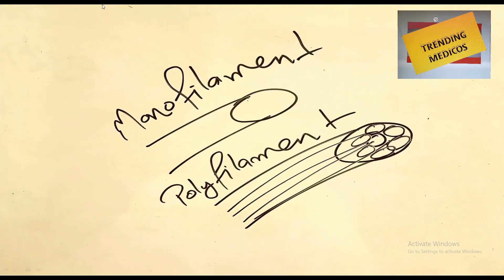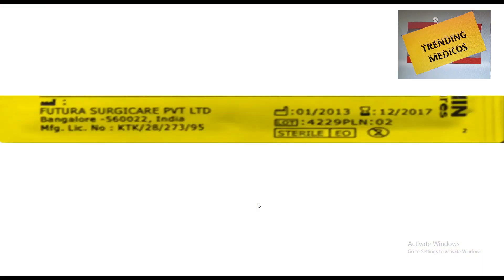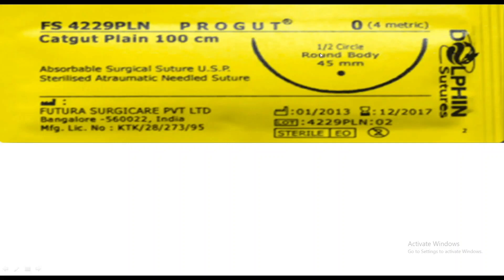Monofilament sutures have less chance of infection, while polyfilament sutures have more chances of infection. Natural sutures are degraded by enzymatic reaction — an important MCQ point — while synthetic sutures are degraded by hydrolysis. As seen in the diagrams, monofilament has a single filament while polyfilament has many filaments embedded in a sheath, leading to more chances of infection possibly due to the capillary action.